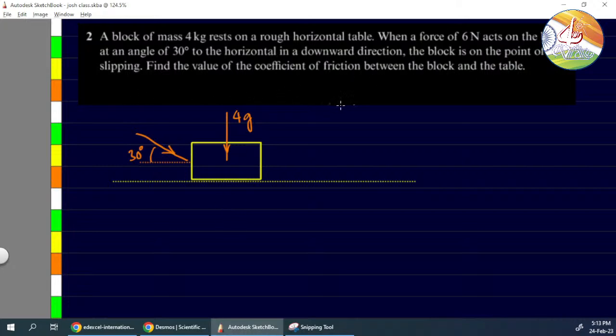The block is at the point of slipping. Find the coefficient of friction. We need to take all the forces. There's an upward reaction force R. Because the force is pushing right, friction acts on the left side: μR.